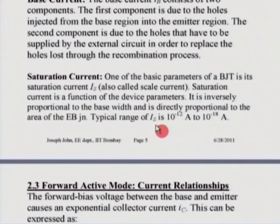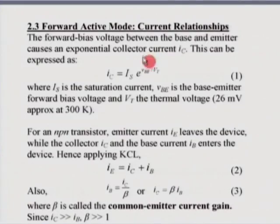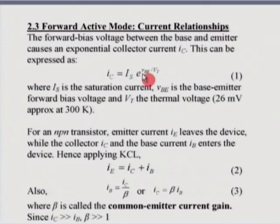Having seen the currents, let us look at the relationships between these three currents. The forward bias voltage between the base and the emitter causes the injection of carriers into the base and subsequently a collector current. This collector current can be expressed as I_C = I_S × e^(V_BE / V_T), where V_T is the thermal voltage, which is typically about 26 millivolt at room temperature.